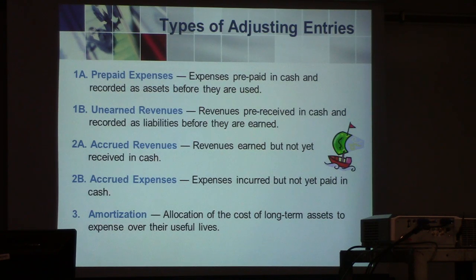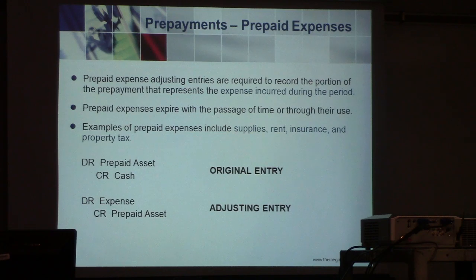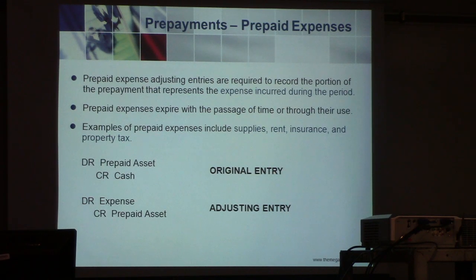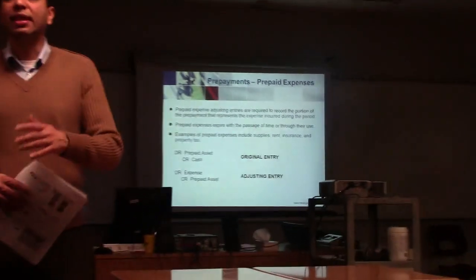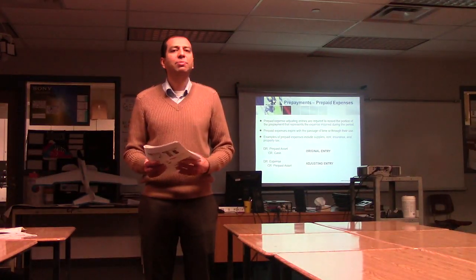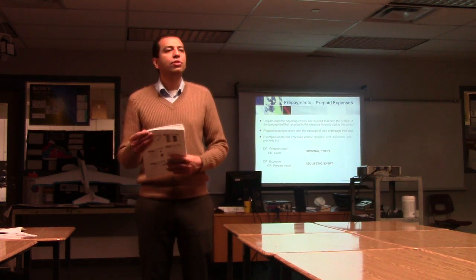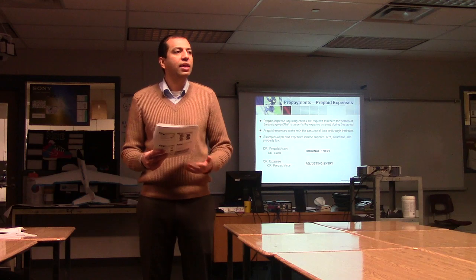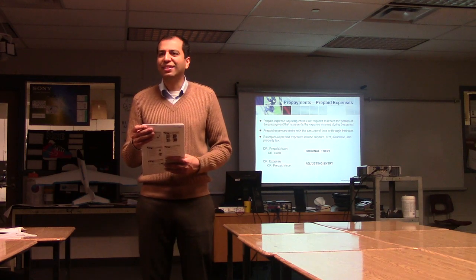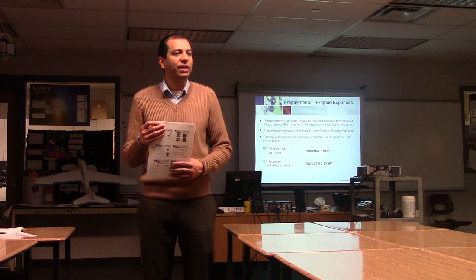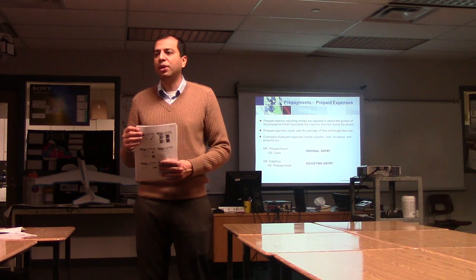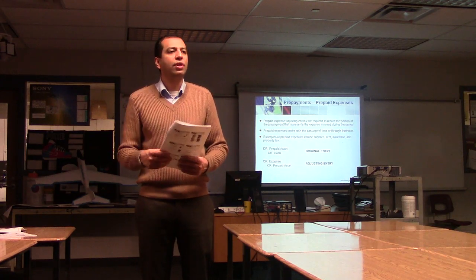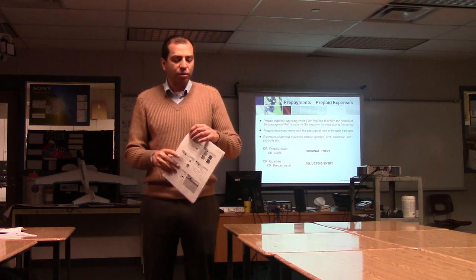Prepaid expenses are expenses paid in cash and recorded as assets before they are used — for example, prepaid insurance or prepaid rent. If you prepay the rent for the entire year up front and the year hasn't finished, at the end of each month you would take part of that prepaid asset and recognize it as an expense. This is called adjusting the prepaid account, which is an adjusting entry that follows the matching principle.